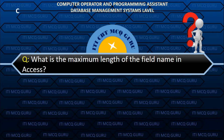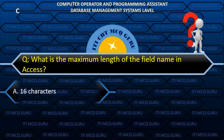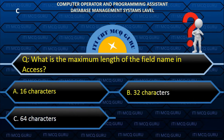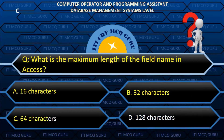What is the maximum length of the field name in Access? C. 64 characters.